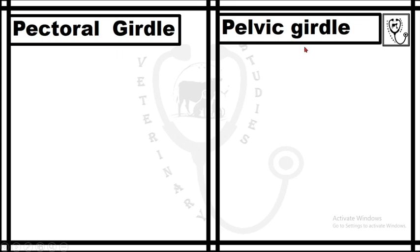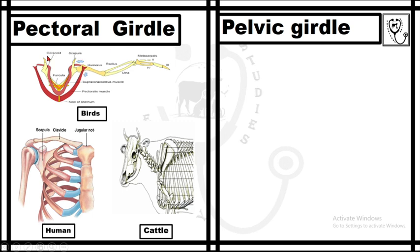The pectoral girdle, which is also known as the shoulder girdle. In poultry birds, it comprises a pair of coracoid, furcula, and scapula bones. In the case of humans, the pectoral girdle consists of a pair of scapula and clavicle bones. In humans, the clavicle bone is also known as the beauty bone.